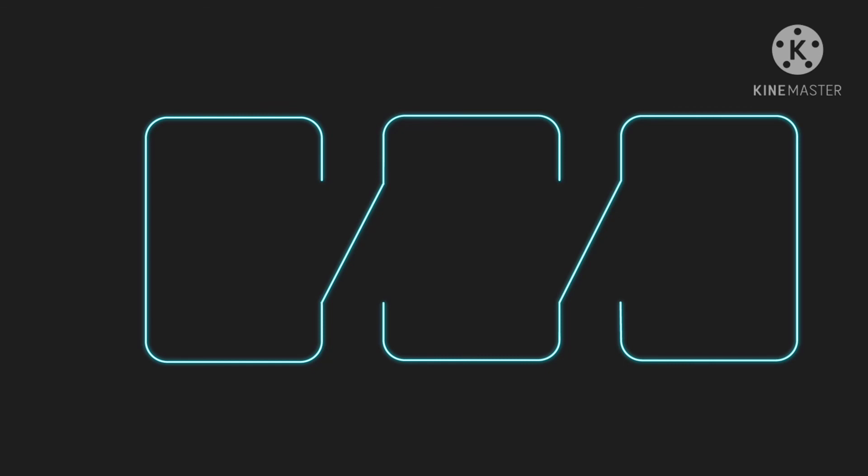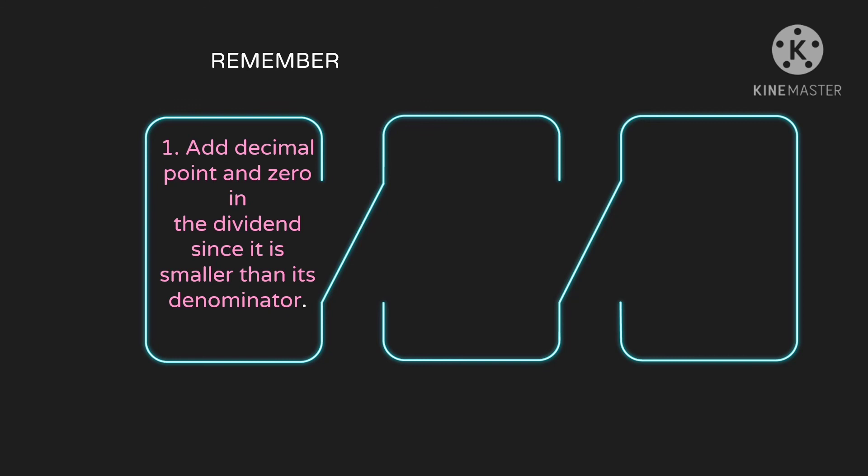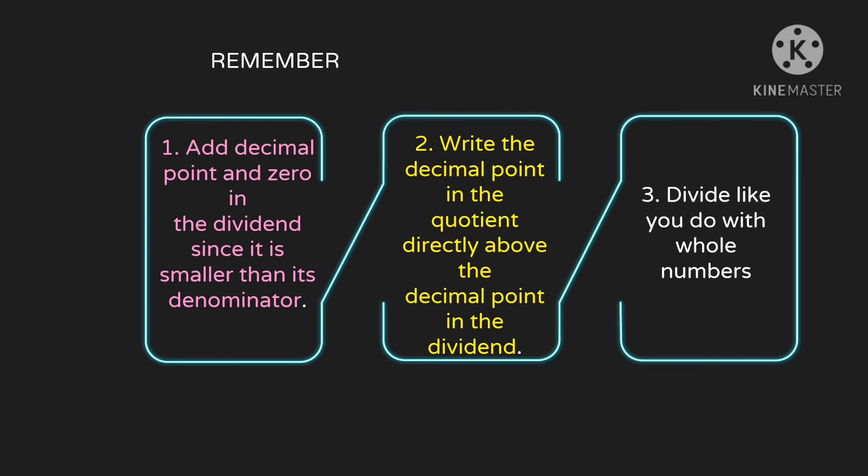Here are the things to remember when dividing whole numbers where the quotient is a decimal number. First, add decimal point and 0 in the dividend since it is smaller than its divisor. Next, write the decimal point in the quotient directly above the decimal point in the dividend. Place the decimal point aligned with the decimal point of the dividend. Third, divide like you do with whole numbers. That's the process or rule in dividing whole numbers where the quotient is a decimal number.